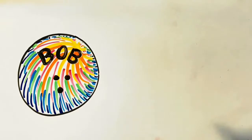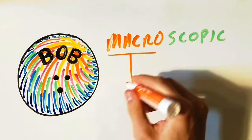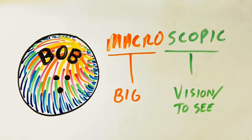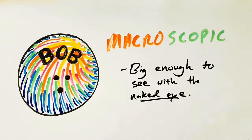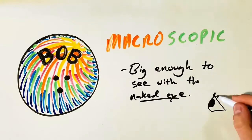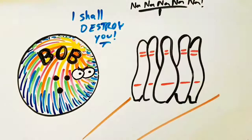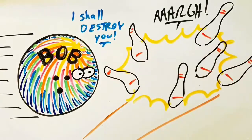The bowling ball is an example of an object we would call macroscopic. 'Macro' means big and 'scopic' means vision or to see. The rule of thumb is that an object is macroscopic if it's big enough to be seen with the naked eye. What about a really tiny object such as a cell?